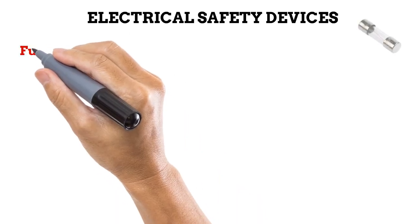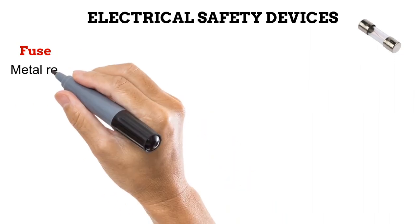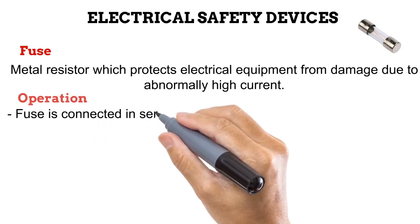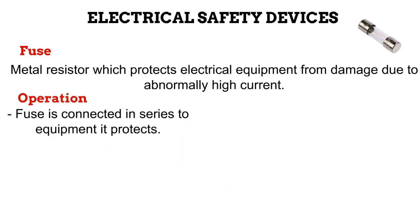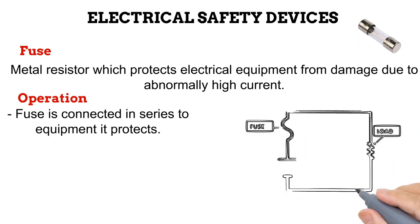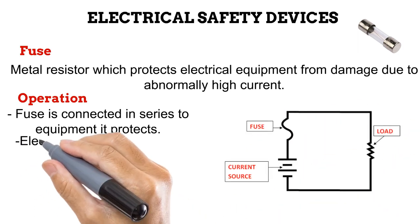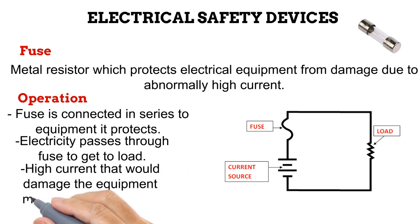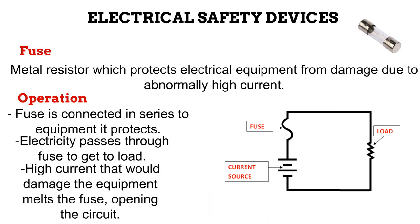The first electrical safety device we'll be looking at is the fuse. It is a metal resistor wire which protects electrical equipment from damage due to abnormally high current. A fuse is connected in series to the equipment it protects, so all incoming electricity has to pass through the fuse to get to the equipment or load. As you can see on the diagram, the fuse is between the source of electric current and the equipment, labeled as load. Current moves in a clockwise direction from the source, meaning it cannot reach the load without passing through the fuse first.